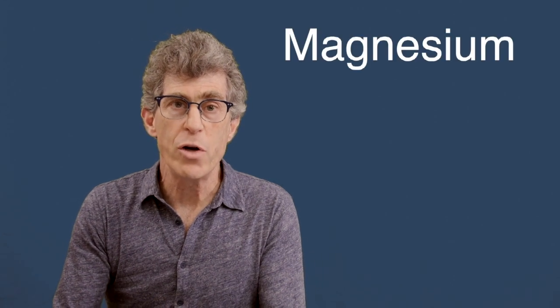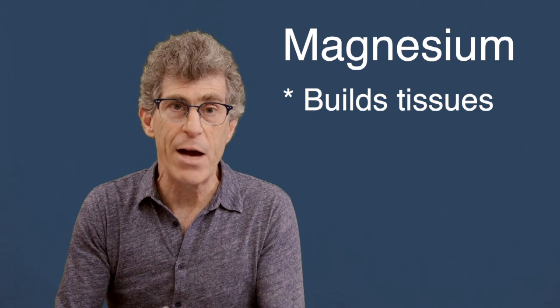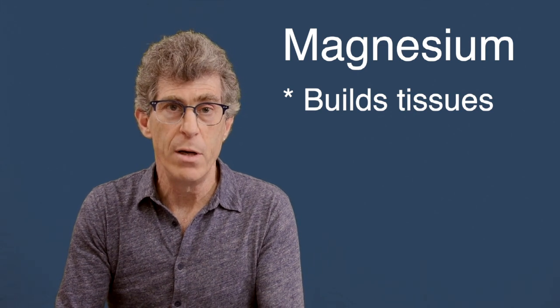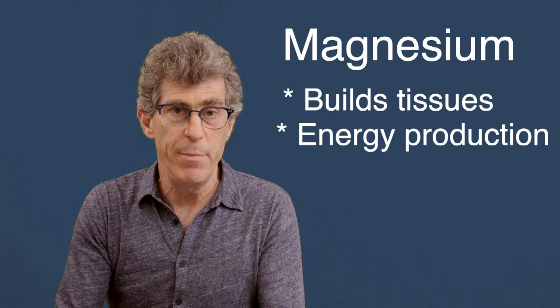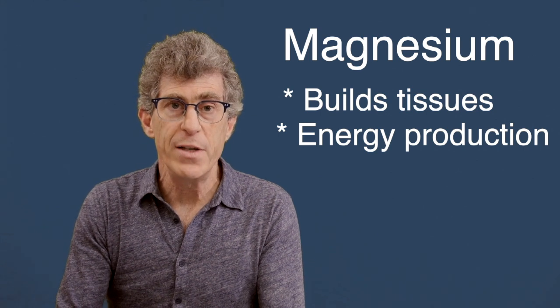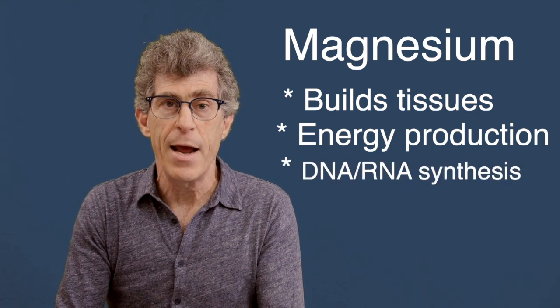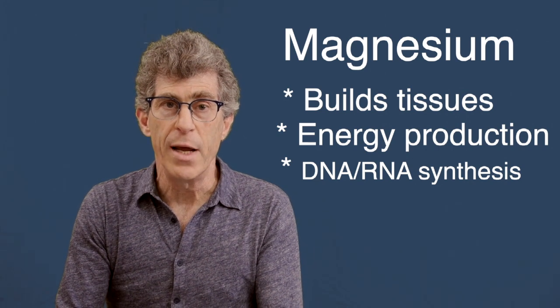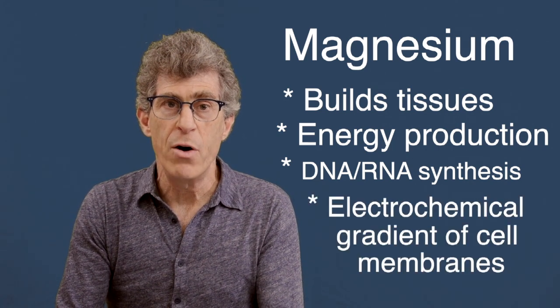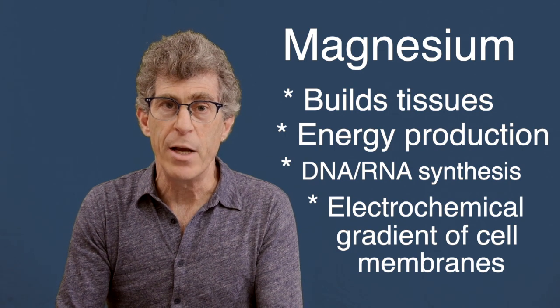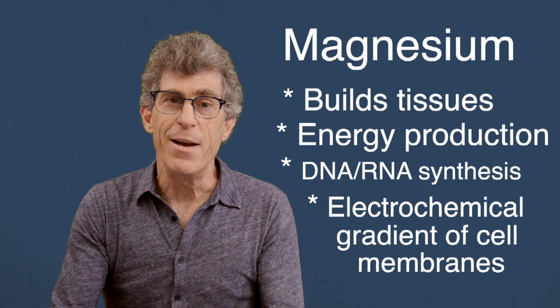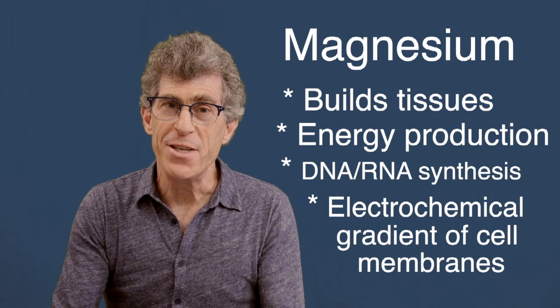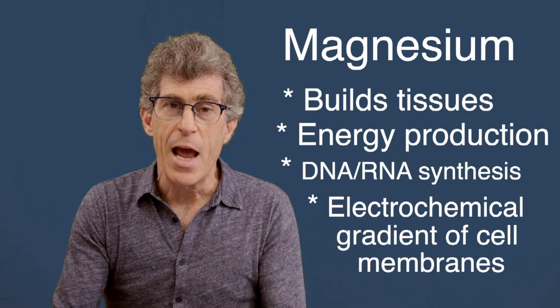Magnesium is important for so many components of our cellular health. It makes up a large component of our tissue mass and is highly concentrated in tissues like bone. It's involved in energy production and the production of ATP. It's involved in synthesis of DNA and RNA. And I believe most importantly, it's involved in maintaining what's known as the electrochemical gradient across cell membranes. You're going to understand exactly what I mean and why magnesium is so important to the way that our nervous system works.